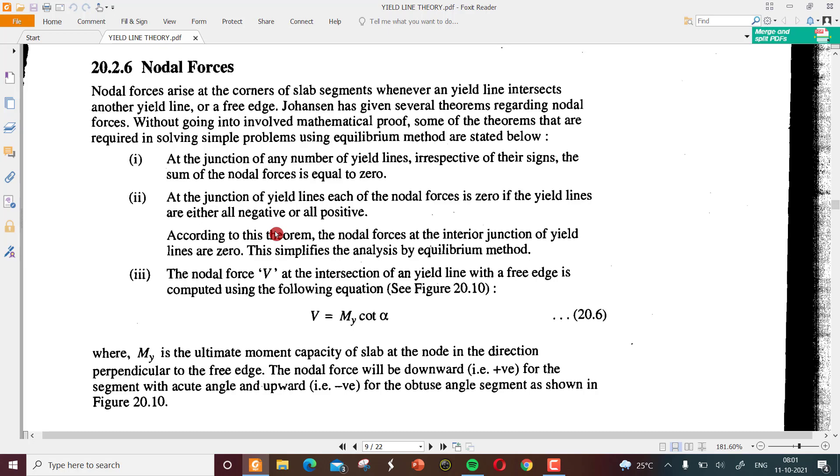If both are either positive or both negative, then individual value should be zero because even with addition it can be zero because of the same sign. According to this theorem, the nodal forces at the interior junction of yield lines are zero because at the interior point all will be positive yield lines. This simplifies the analysis by equilibrium methods.